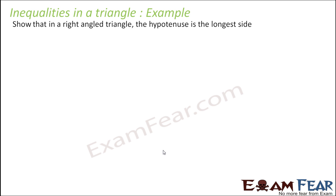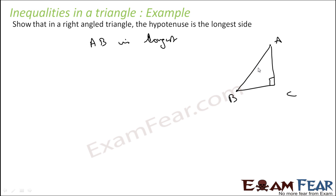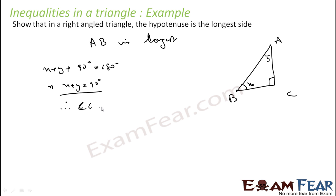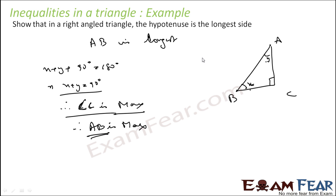To prove that in a right triangle the hypotenuse is the longest side: the angles are 90°, X, and Y. X plus Y plus 90° equals 180°, so X plus Y equals 90°. Therefore angle C (90°) is the maximum angle. Since AB is opposite the maximum angle, AB is the longest side — and AB is the hypotenuse. Thus the hypotenuse is the longest side in a right triangle.